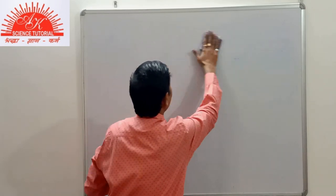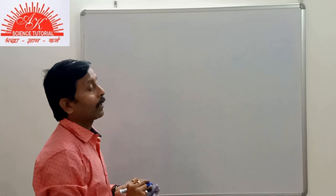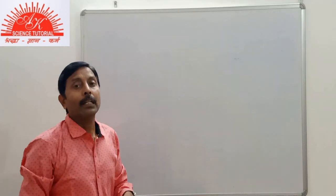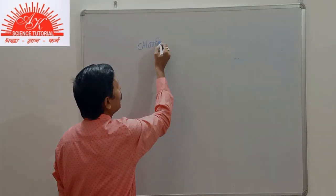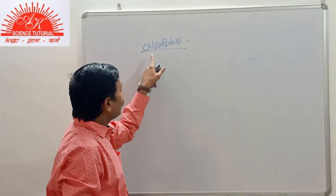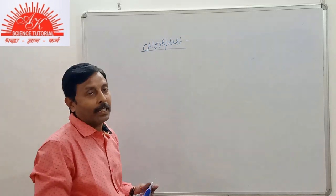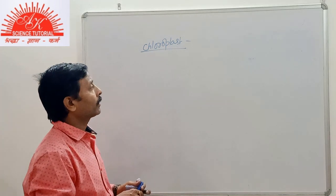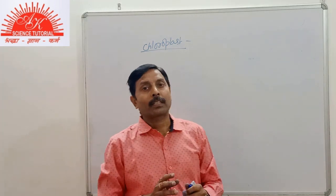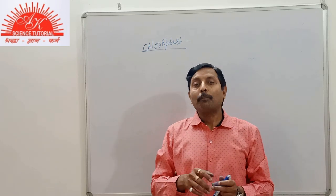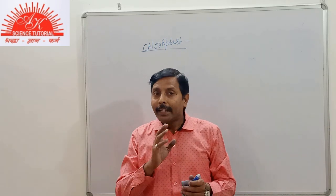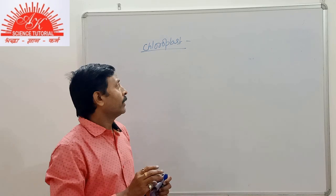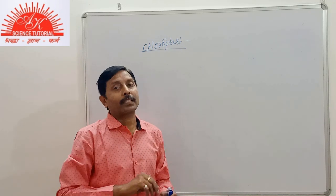The next topic is chloroplast. Chloroplast is a plastid — a cell organelle in plant cells. There are three types of plastids.